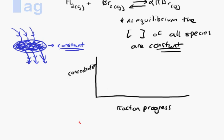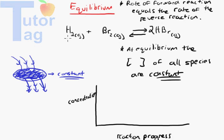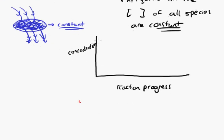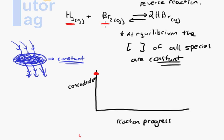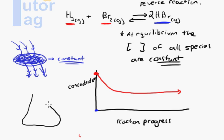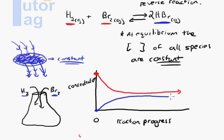At the very beginning, before anything is created, we only have H₂ and Br₂, so they'll have a high concentration. As the reaction proceeds, the H₂ and Br₂ concentrations go down and eventually reach a constant level. The HBr concentration starts at zero — initially in our container we entered H₂ and Br₂, so at time equals zero there is no HBr. As the reactants combine to form HBr, its concentration goes up and reaches a steady, constant concentration.